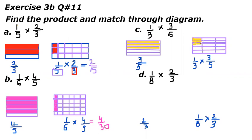This is the third part. One-third of three-fifths: multiply the numerators — one times three gives us three, and three times five gives us fifteen. Three-fifteenths means there are fifteen total boxes and out of fifteen only three boxes are colored.